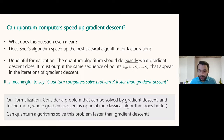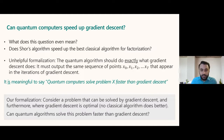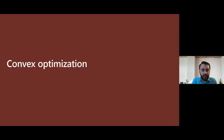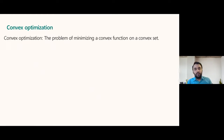Fortunately, there's a canonical problem that fits the bill perfectly — it's in introductory textbooks on convex optimization. Let me give you a quick crash course on convex optimization. At a very high level, convex optimization is the problem of minimizing a convex function over a convex set. A convex function is one where if you take any two points on the function and join them, that segment lies above the function.